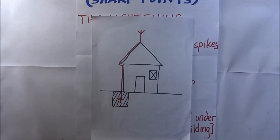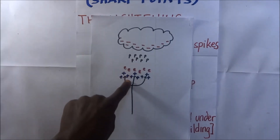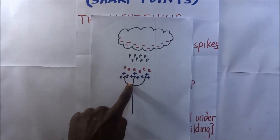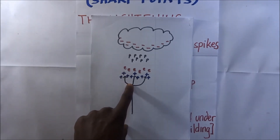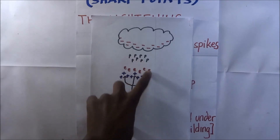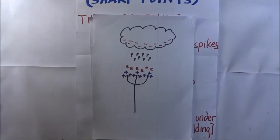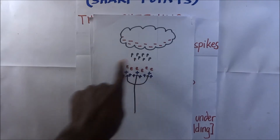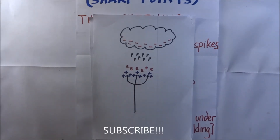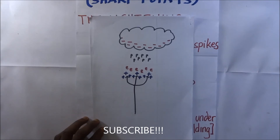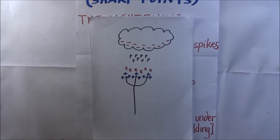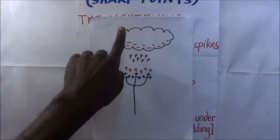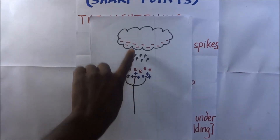What exactly happens here? When a negatively charged cloud comes near the spikes, a very high positive charge is induced at the spikes. This creates a very high electric field around the spikes, which causes the ionization of air around the spikes. When the air around the spikes gets ionized, positive ions in the air are repelled towards the cloud, and in so doing they discharge the cloud.